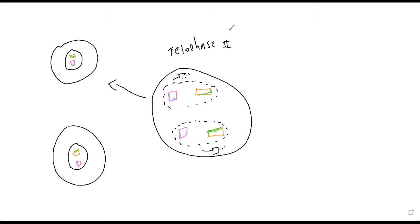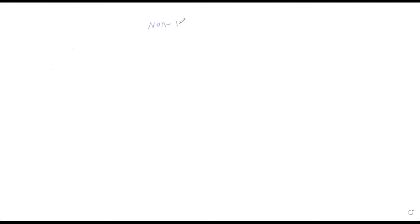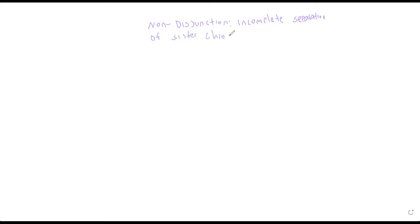There is a disorder that can happen during anaphase 1 of meiosis 1 called a non-disjunction disorder. There's a correlation between the age of the parents and the occurrence of non-disjunction disorders. This is the incomplete separation of sister chromatids during anaphase 1.